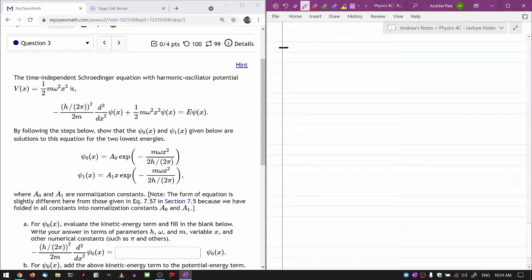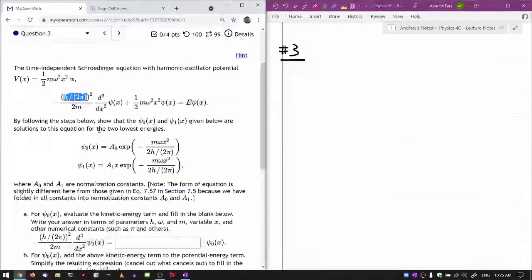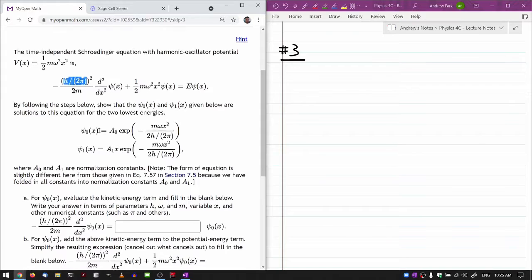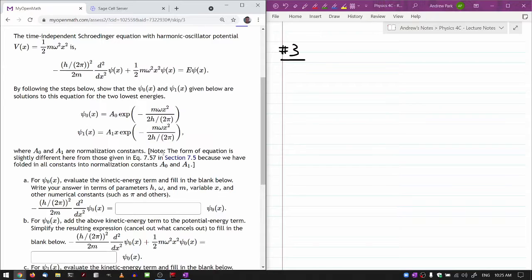So this is question number three. That's the time-independent Schrödinger equation with the harmonic oscillator potential. One thing I'll do is always write this as h-bar when doing algebra by hand. I'll just plug in h over 2π at the end when plugging in the answers. This question does what I told you - with harmonic oscillator potentials, I'm going to tell you what the solutions look like. I don't want to ask you to solve it yourself.